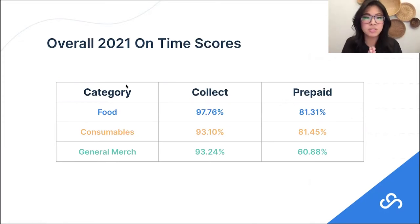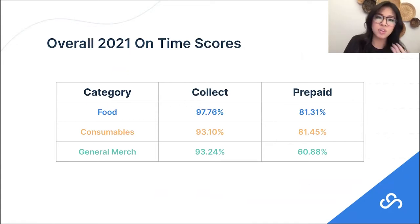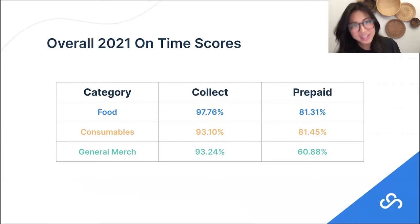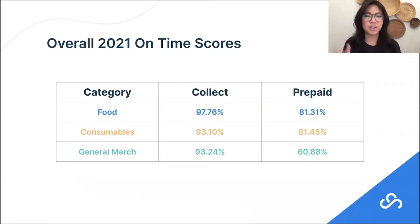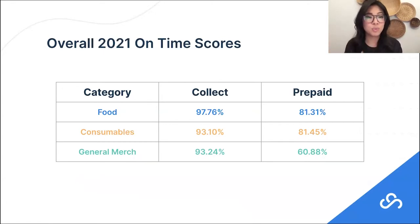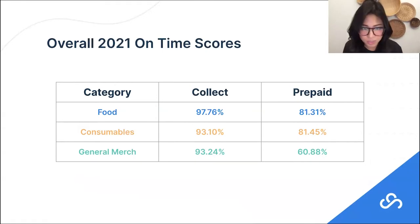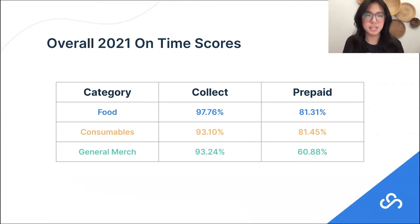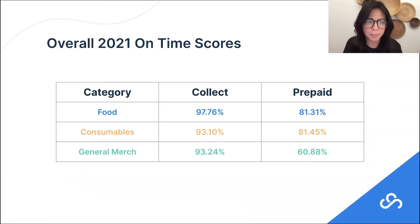One cool thing about SupplyPike is there's not really any other company that's able to share this sort of aggregated industry-level data for OTIF, and we're really excited to share that with you guys today. We are looking at 2021 data. Walmart's fiscal year starts in February and ends in January, so we wanted to give you an entire fiscal year worth of data. When we get into February of 2023, we'll be able to do a similar analysis for the entire fiscal year ending 2022. That's why you're seeing it a year behind — it's because it's a full Walmart year.